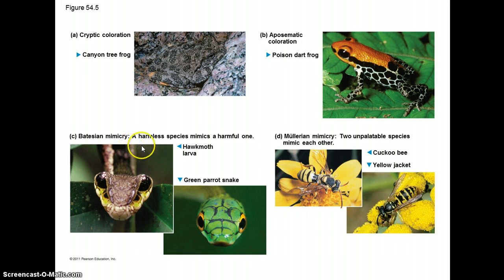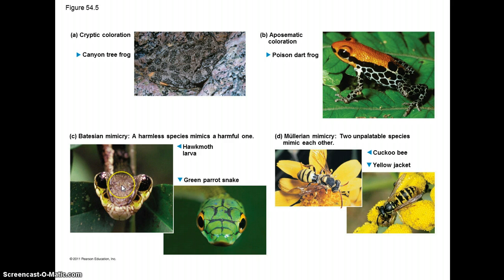Mimicry is also common. In what's called Batesian mimicry, a harmless species mimics a harmful one. For example, this moth mimics a snake's pattern — birds that would eat a moth but avoid a snake will see this and think it looks like a snake, even though it's a moth posing in a particular pattern. Müllerian mimicry is where two genuinely dangerous or unpalatable species mimic each other and ride on each other's coattails. A bee and a yellow jacket have a very similar look, so species in general just learn not to mess with them.